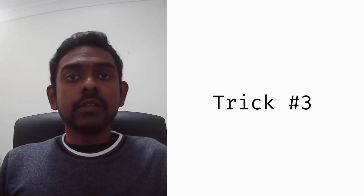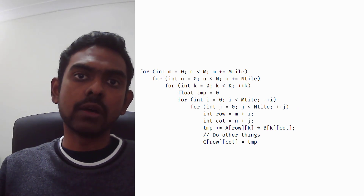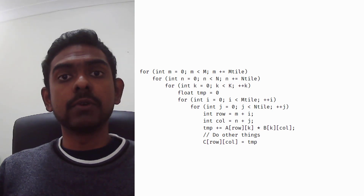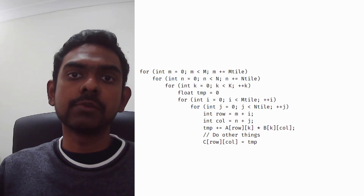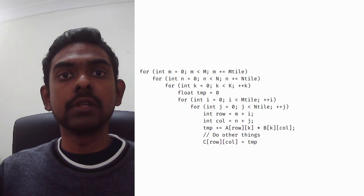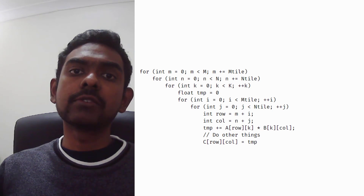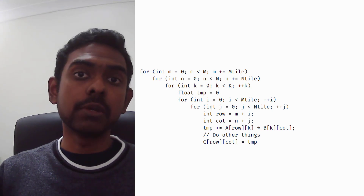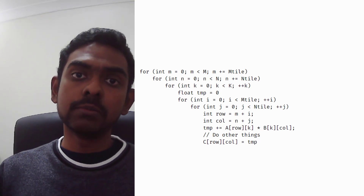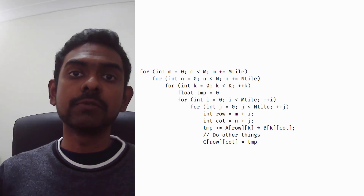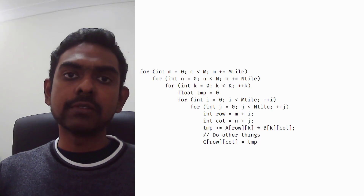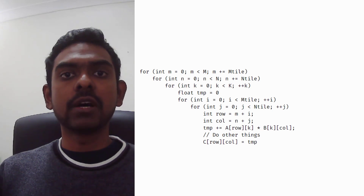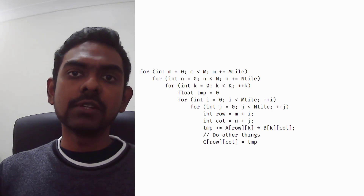Now let's talk about trick number three. It's faster to do computations in a single kernel than in two sequential kernels. In deep neural networks, common operations that follow matrix multiplication — such as adding a bias or applying ReLU — make sense to combine into one kernel. If you don't combine them, one kernel writes data to global memory, then the next kernel retrieves that data back from global memory into shared memory or registers and writes it back again. But if you do all the computations in a single kernel, the data doesn't need to leave the multiprocessor until all computations are done.